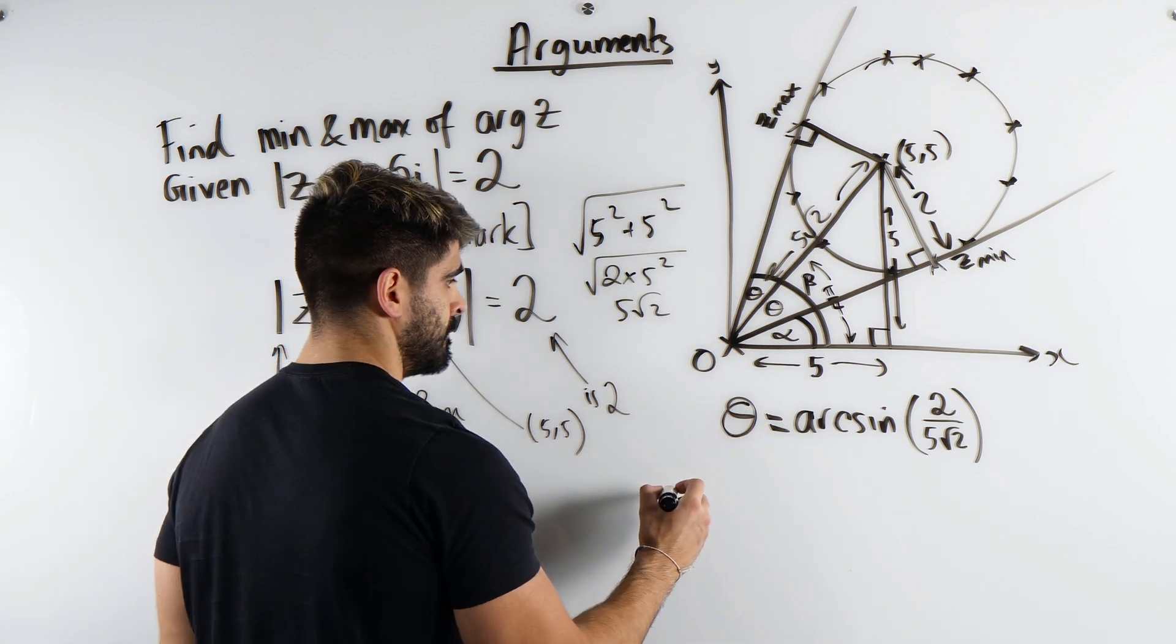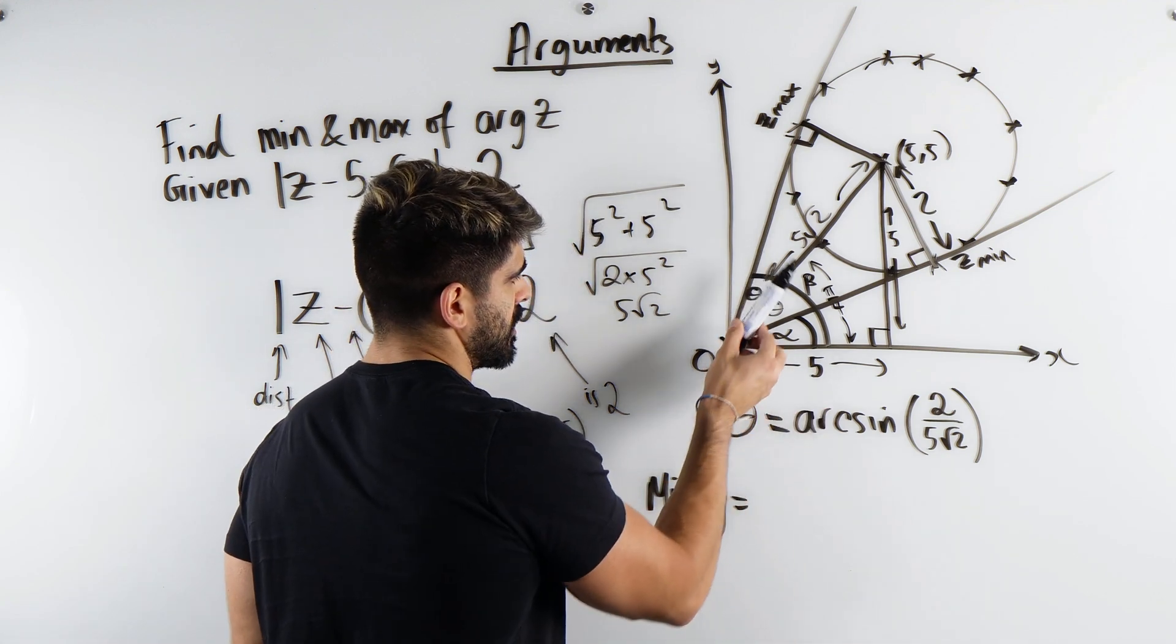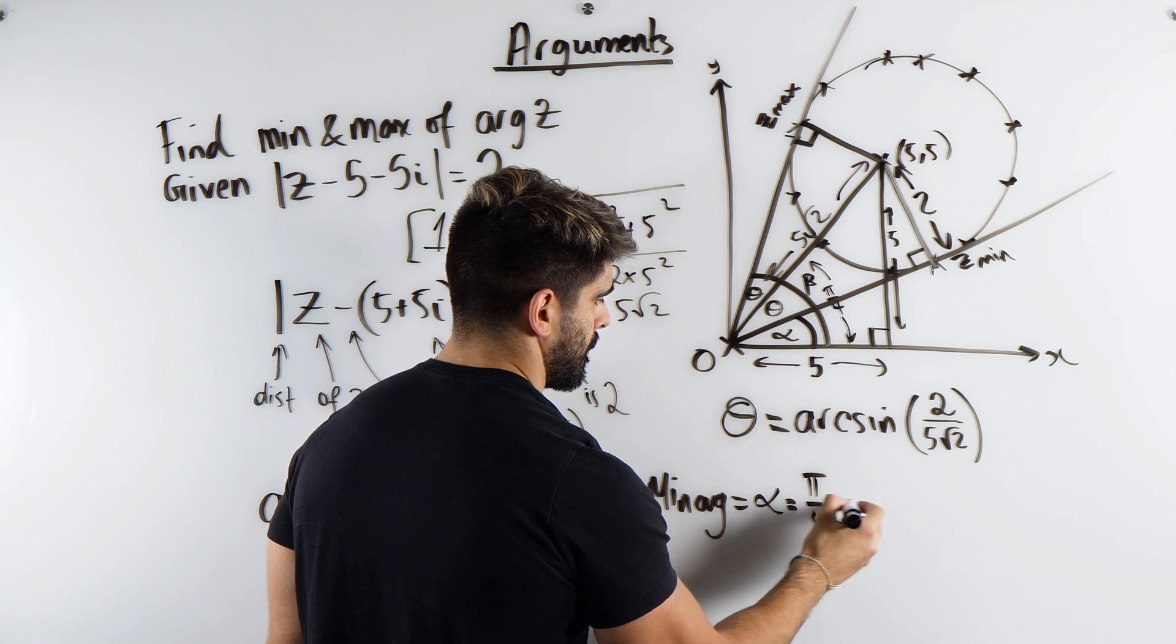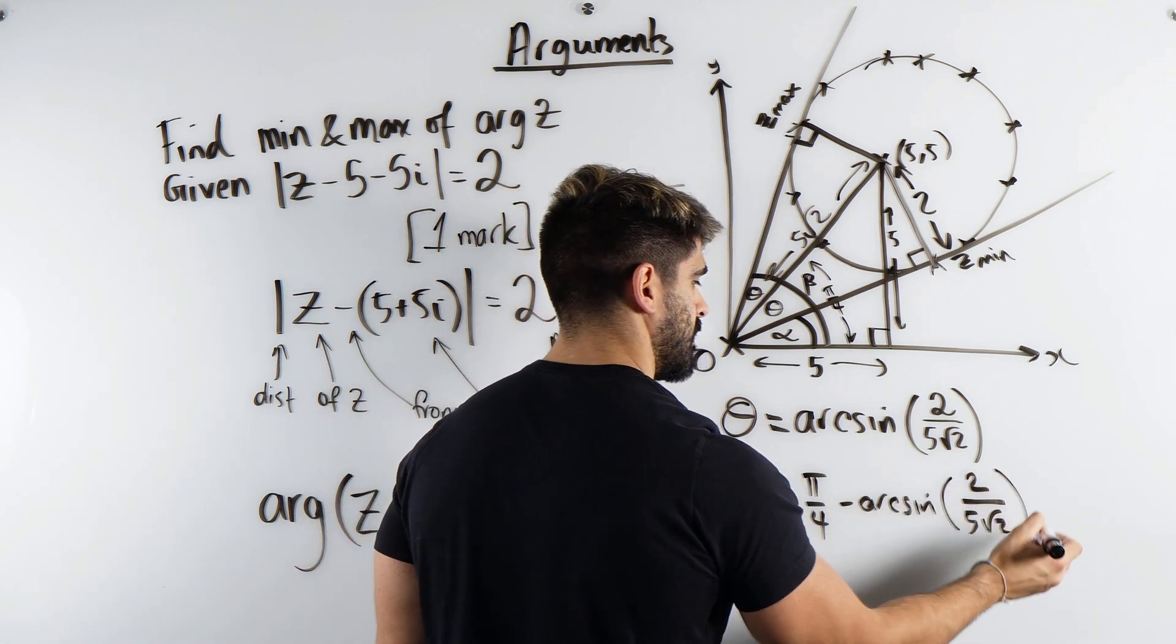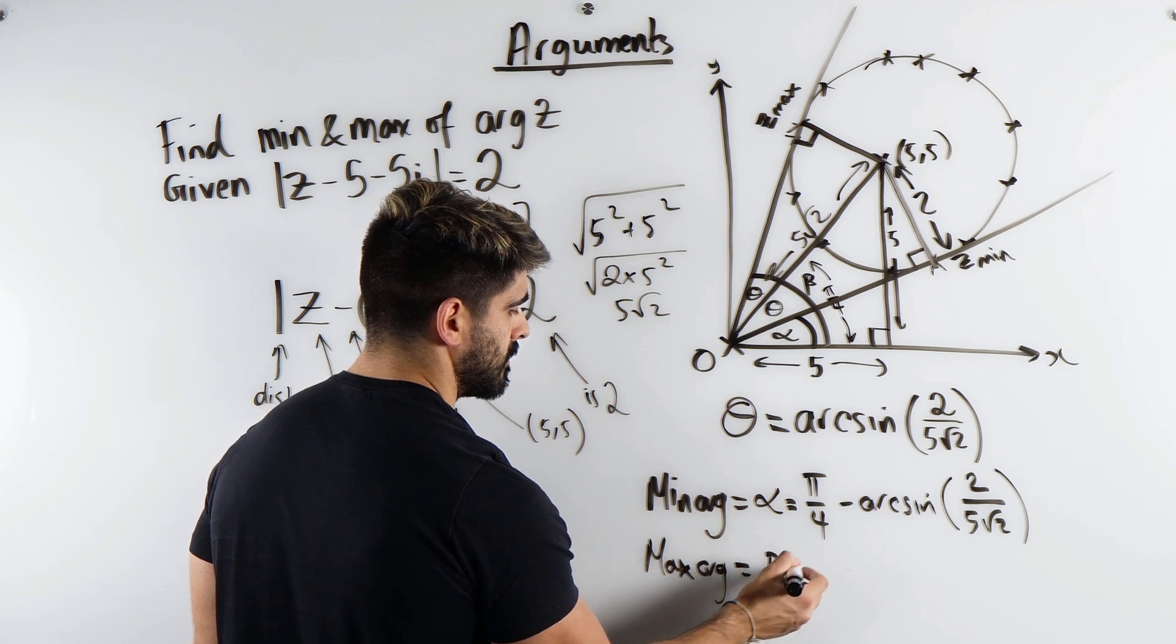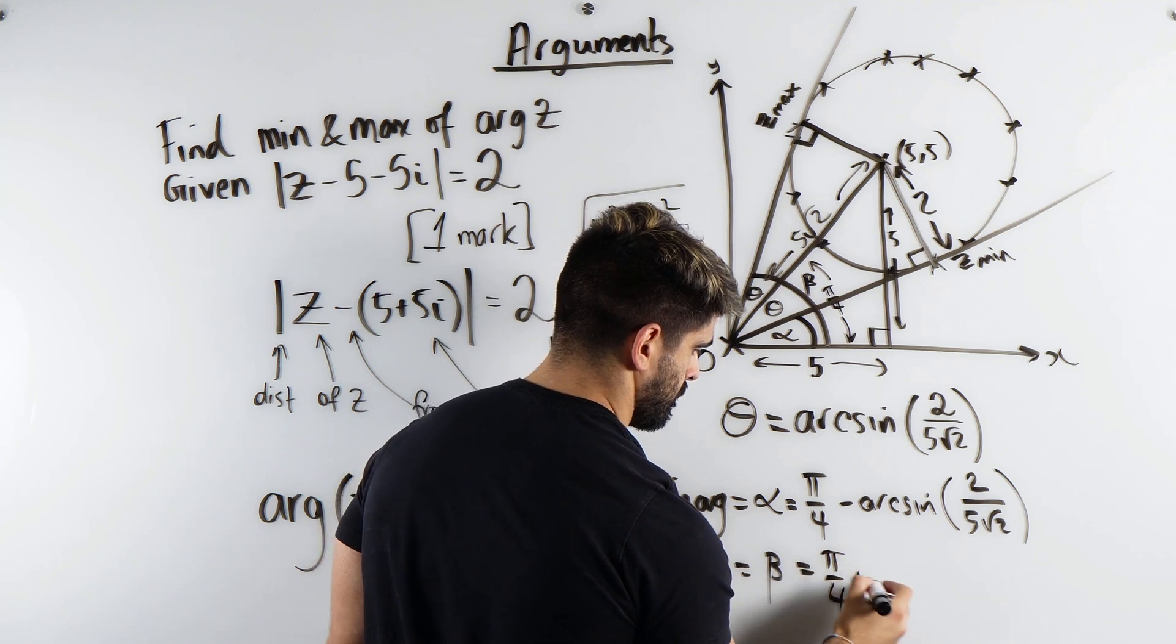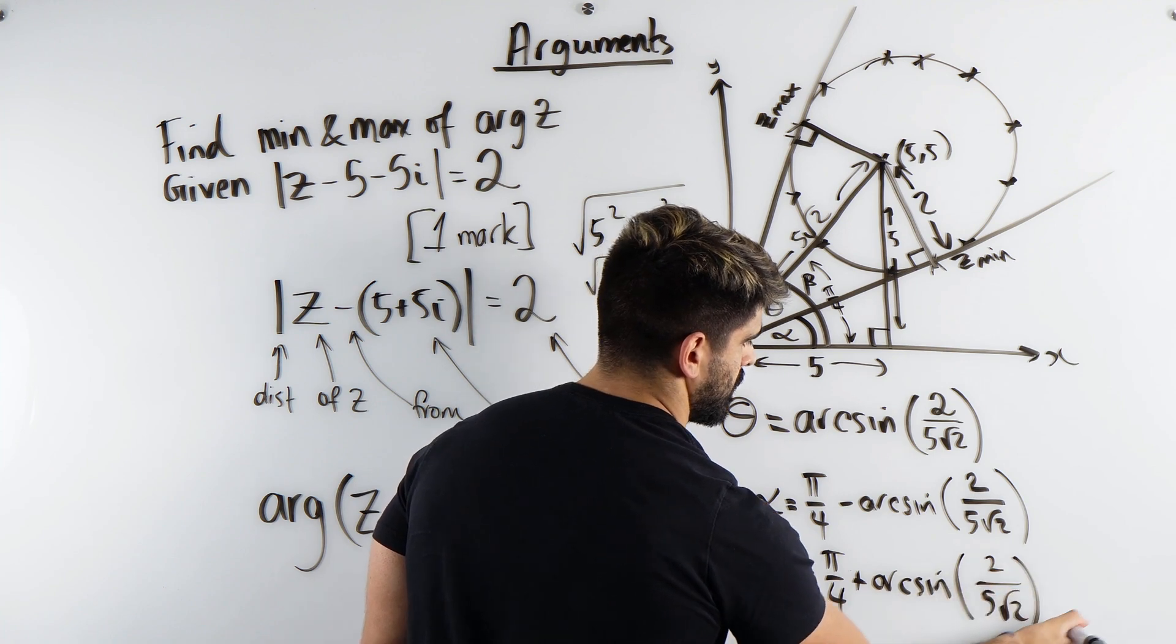So the minimum, we're basically done now. If they wanted you to round it, you guys do that. So we're going to do alpha, I call it alpha, is my pi over 4 minus theta. So it would be pi over 4 minus arc sine, 2 over 5 root 2. Then the max arg, beta, is my pi over 4 plus theta. And that is our beautiful solution.